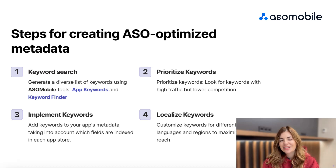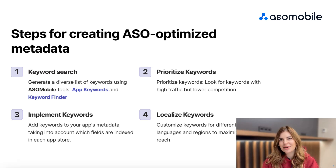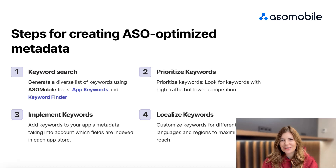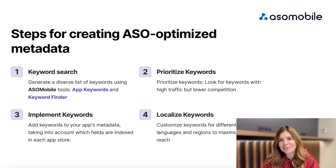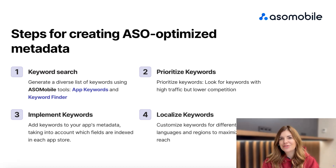The key is to analyze these keywords using the metrics provided by ASO tools. Look for terms with high search volume or traffic but lower competition. With your list ready, it's time to refine and prioritize. Remember, relevance is crucial — irrelevant keywords can do more harm than good. Also, don't forget to consider popularity. Implement your chosen keywords in your app's metadata and monitor their performance.